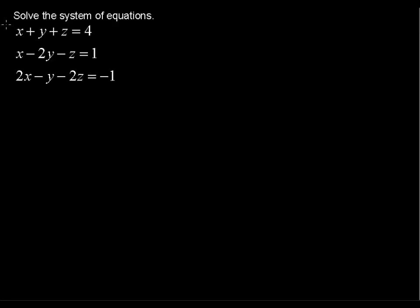Solve the system of equations: x plus y plus z equals 4, x minus 2y minus z equals 1, and 2x minus y minus 2z equals negative 1.